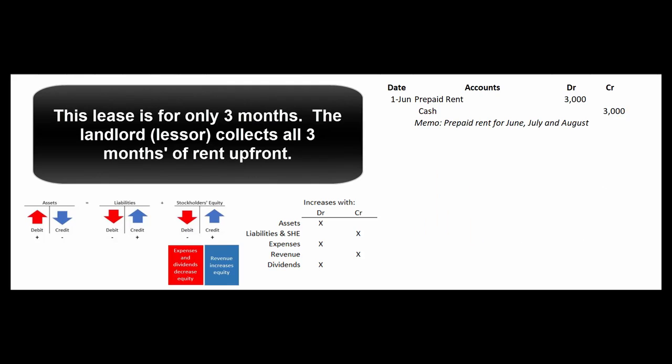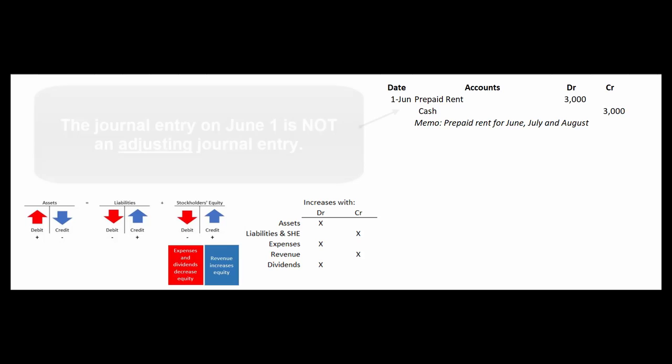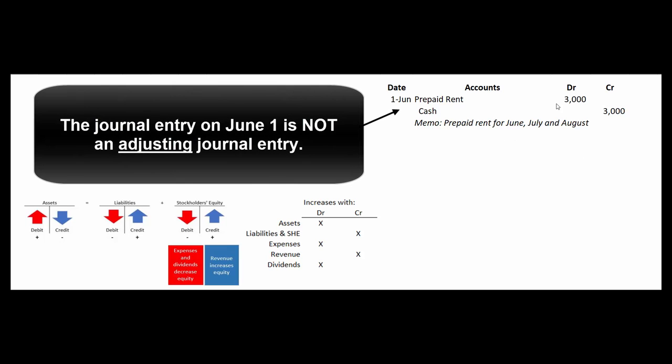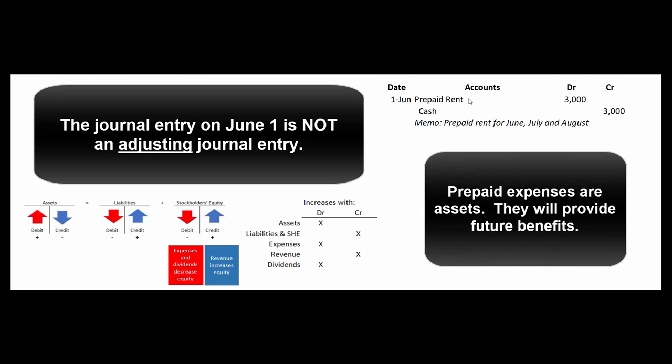For example, let's say we sign a lease for some new space for three months and the landlord says the rent is $1,000 a month but I want you to pay all three months of rent upfront. So there's an event that occurs. We write a check for $3,000, so we debit an account called prepaid rent. Prepaid rent, prepaid insurance, those are assets. They increase with debits. Cash is an asset. It decreases with credits.